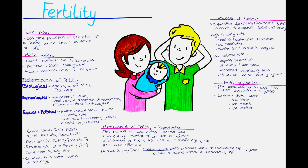Public policy plays a significant role in shaping fertility patterns. Some governments implement restrictive policies to encourage couples to have fewer children, aiming to control population growth and address challenges associated with overpopulation. On the other hand, certain governments adopt pronatalist policies that provide incentives to encourage couples to have more children, often driven by concerns of low birth rates, aging populations, and potential workforce shortages. Culture, including religious beliefs and practices, strongly influences attitudes towards contraception and family planning. Religious doctrines may discourage or prohibit the use of artificial contraception, while other cultural and religious groups may have different perspectives on family planning methods.